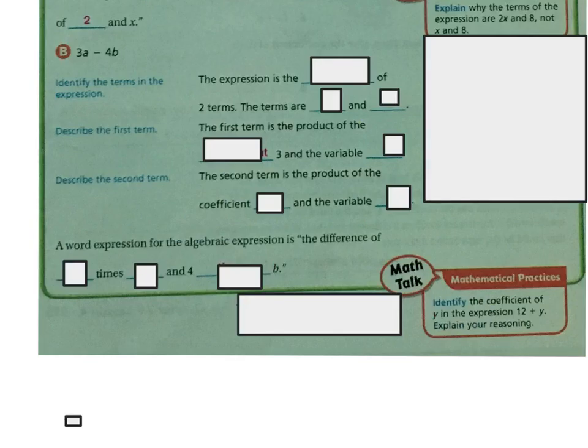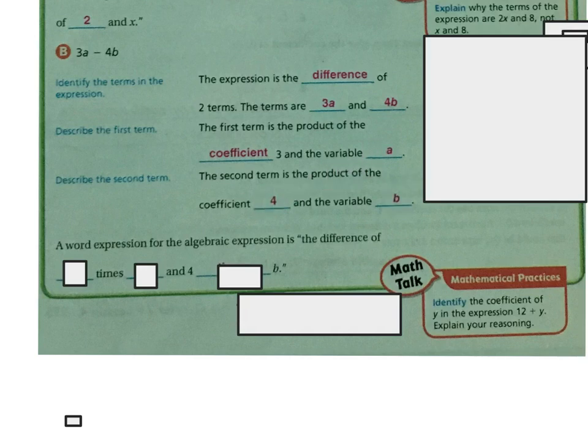Now let's identify the terms in the expression 3a minus 4b. The expression is the difference of two terms: 3a and 4b. The first term is a product of the coefficient 3 and the variable a, and the second term is a product of the coefficient 4 and the variable b. So a word expression for this algebraic expression is the difference of 3 times a and 4 times b.